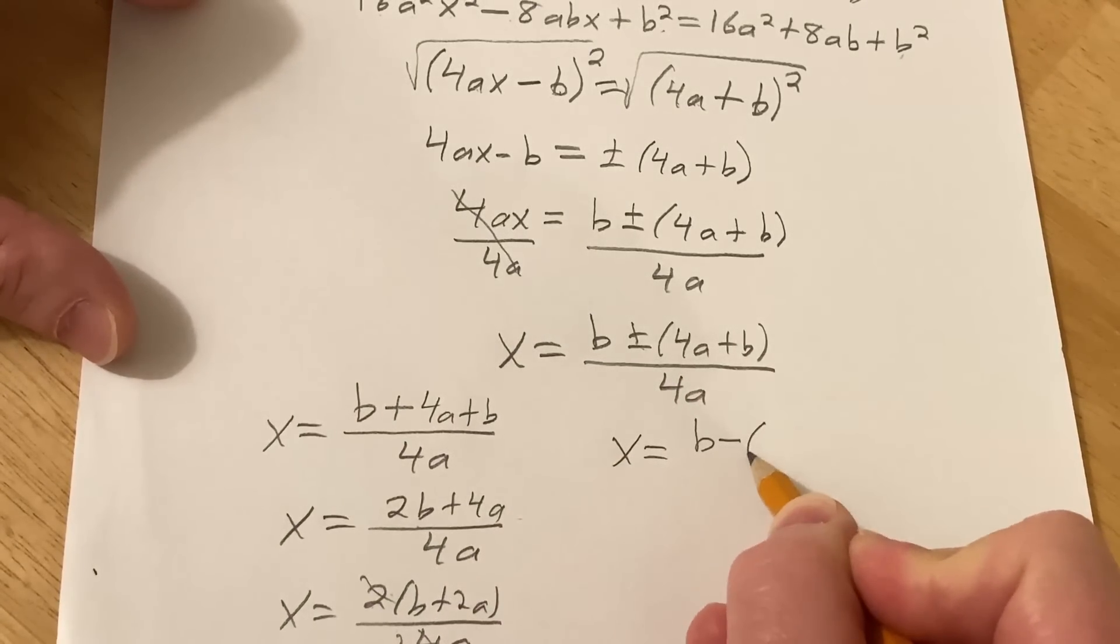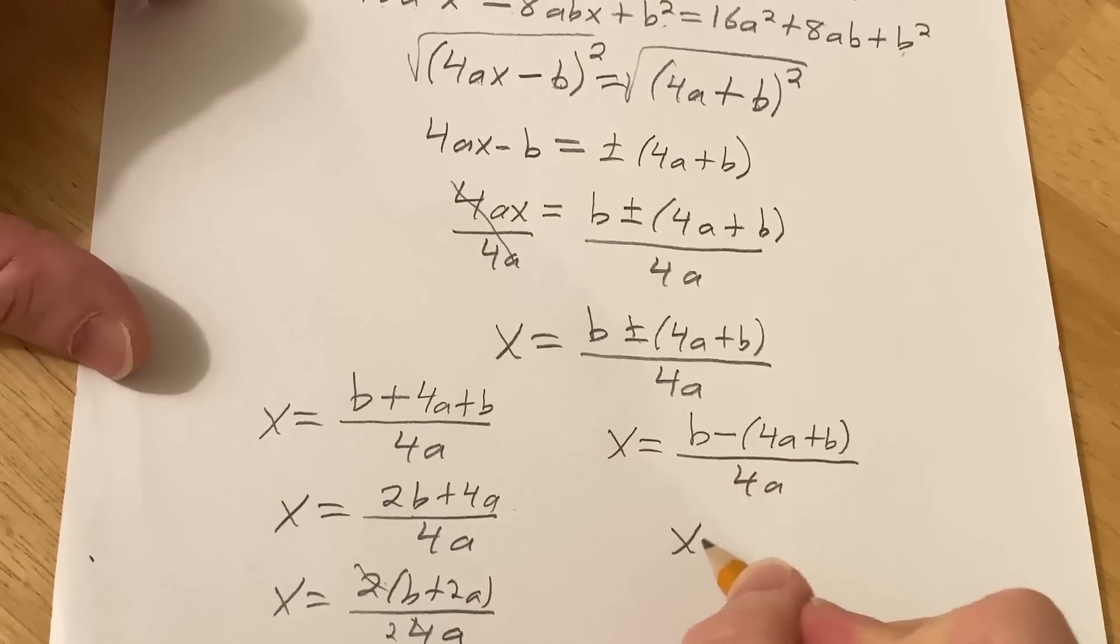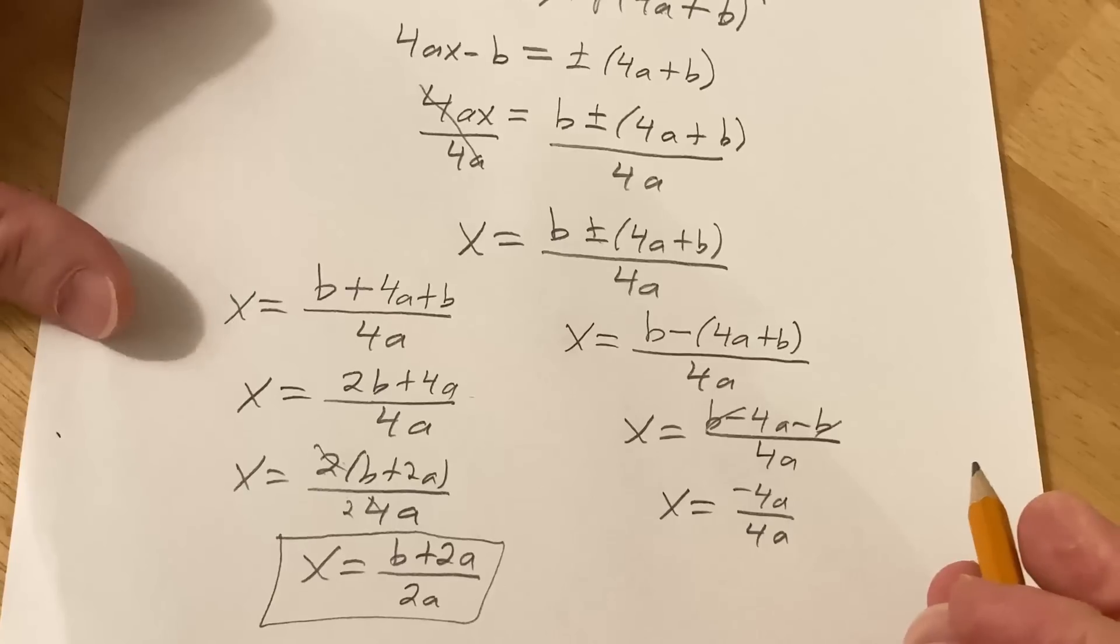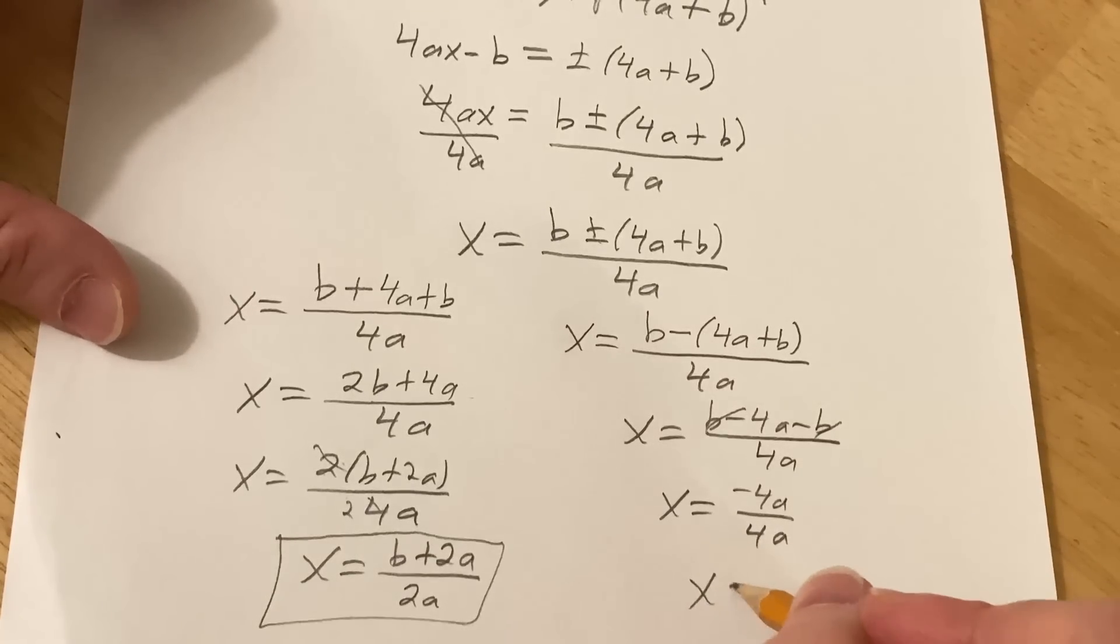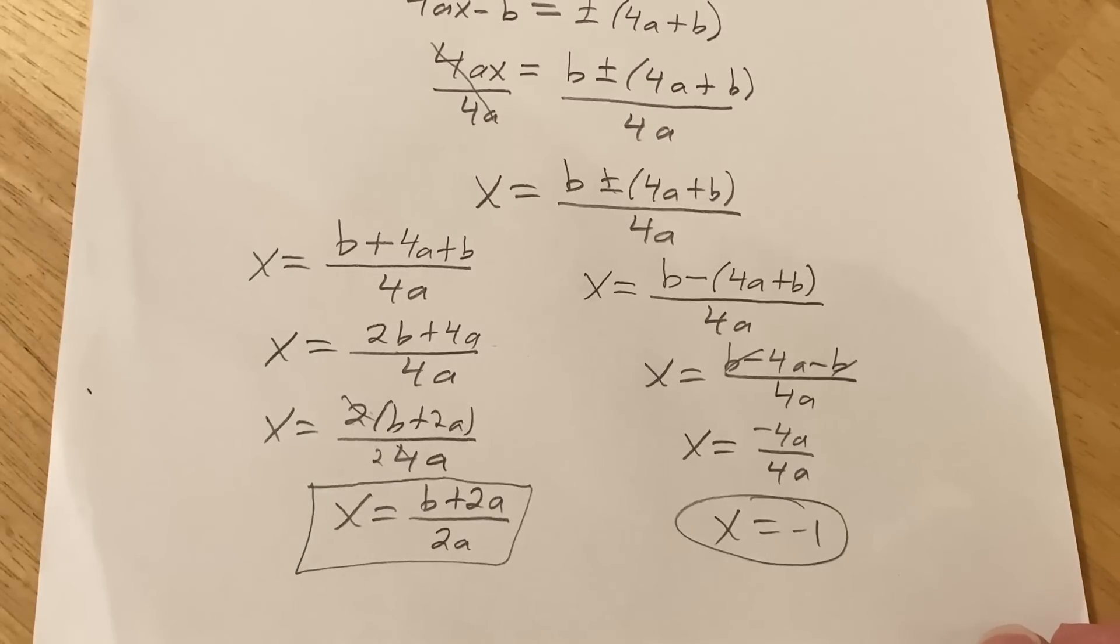So then this one will be the minus case. B minus parentheses. You see how the parentheses is really important here? Over 4a. Much cleaner. So this is going to be b minus 4a minus b over 4a. So this will be, these will cancel. So you'll get negative 4a over 4a. So that's just going to be negative 1. What a weird answer.